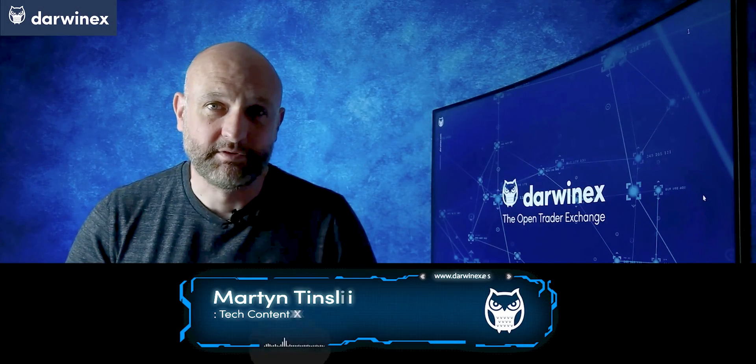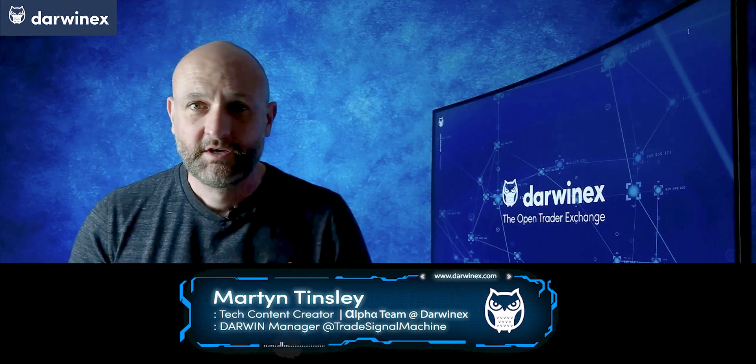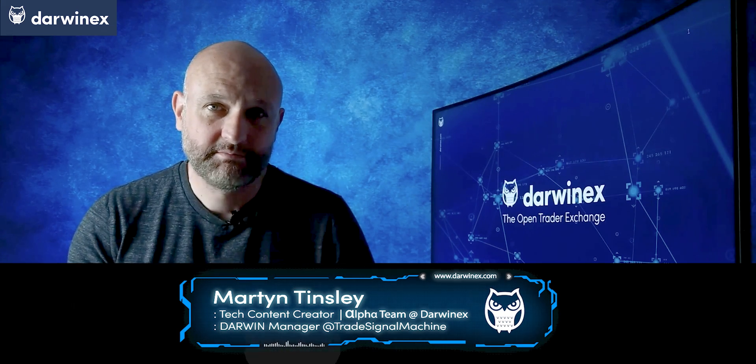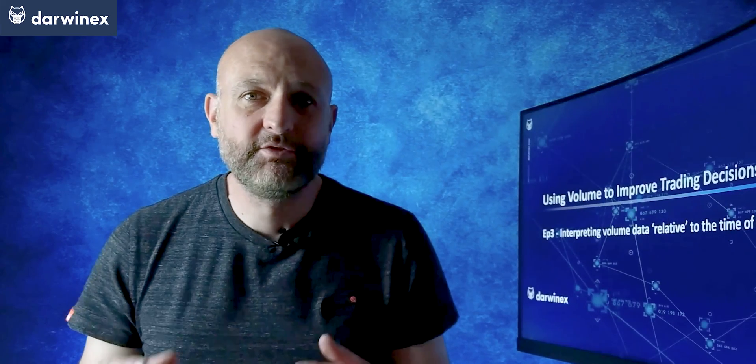Last time we looked at the basic principles of how volume data can be used to give an indication of the commitment behind a move in price. By understanding if there is a significant commitment or not to the price move, it can help to give clues as to the probability of what might happen next. But I also issued a warning — you can't simply look at the level of volume in isolation, because there's a natural and predictable underlying pattern to the volume throughout the day, irrespective of what the price action is doing. So what you actually need to do is look at whether the volume is high or low relative to what the volume usually does at that particular time of day.